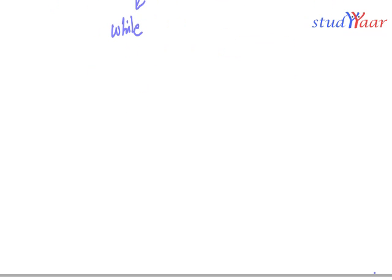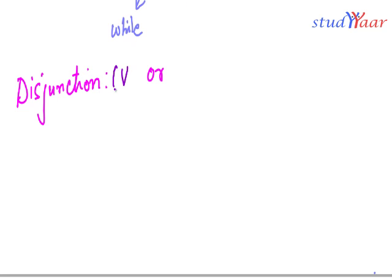The next connective we are going to look at is disjunction, also known as 'or.' A disjunction is represented by the disjunction symbol.